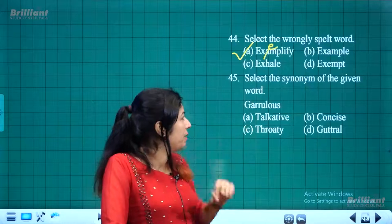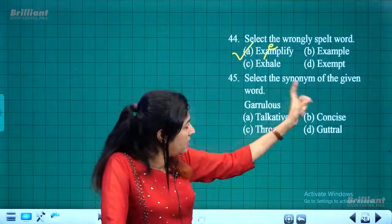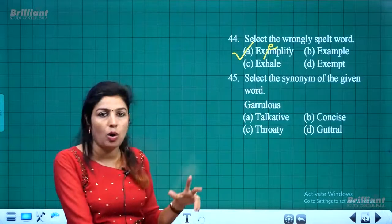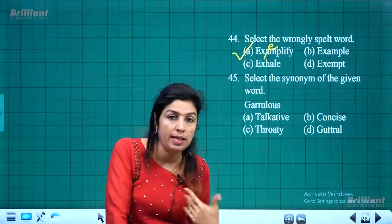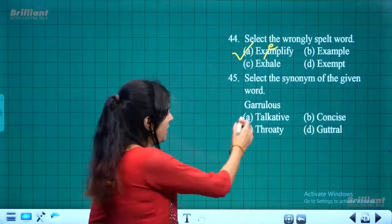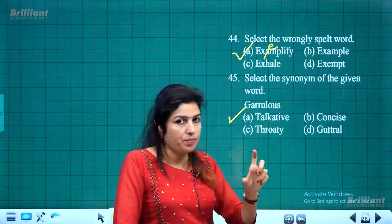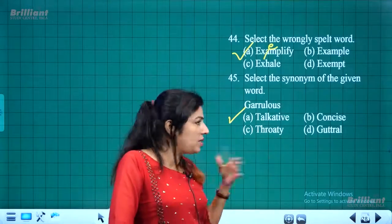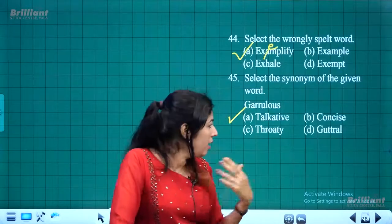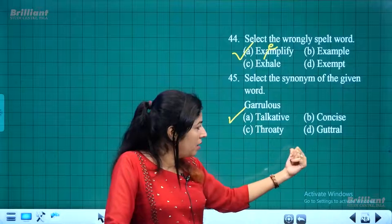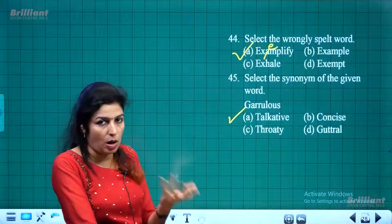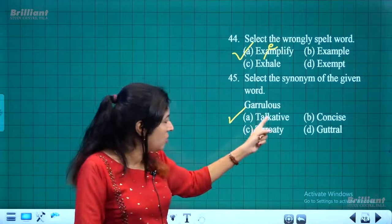Synonym for 'garrulous': Garrulous means one who talks too much in a silly way. Options: talkative, concise, throaty, guttural. Concise means precise. Throaty and guttural refer to voice quality. The synonym for garrulous is 'talkative.'